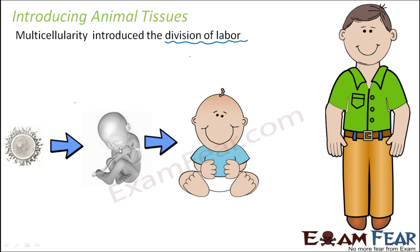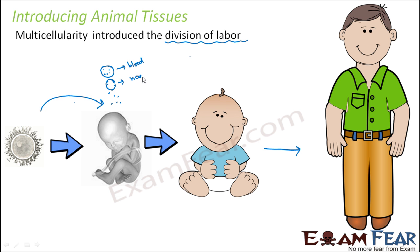This newborn baby will gradually grow and become an adult. Now the cells produced as a result of these cell divisions all take different pathways of differentiation. Some cells will become blood cells, some will group together to form nerve cells, and some will form muscle cells. So they start grouping together and getting differentiated or specialized, and that is how different tissues are formed.